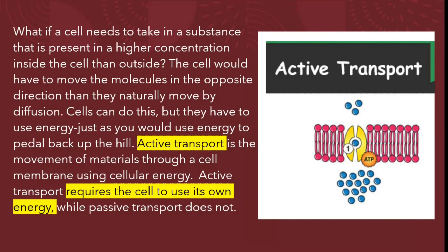What if a cell needs to take in a substance that is present in a higher concentration inside the cell than outside? The cell would have to move the molecules in the opposite direction from how they naturally move by diffusion. Cells can do this, but they have to use energy — just as you would use energy to paddle back up a hill. Active transport is the movement of materials through a cell membrane using cellular energy. Active transport requires the cell to use its own energy, while passive transport does not.